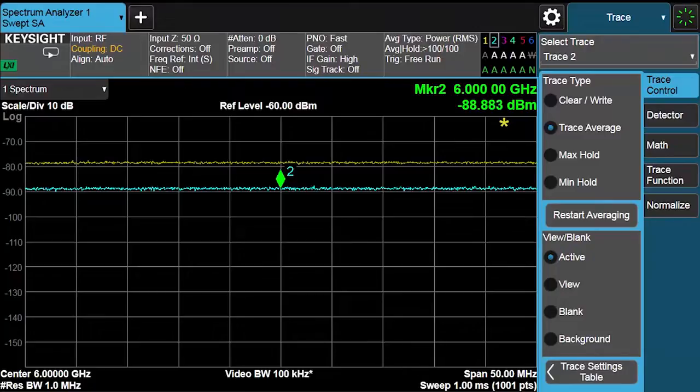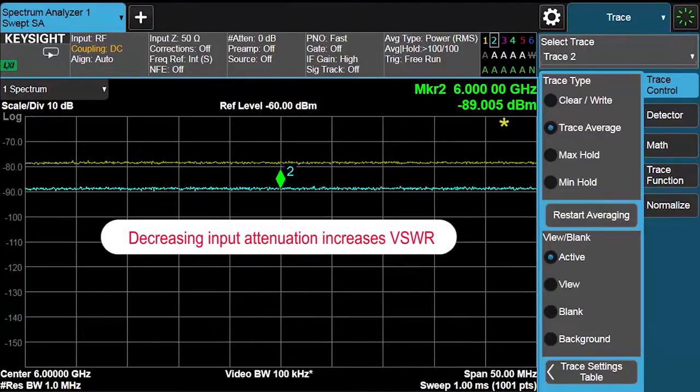The downside to decreasing the analyzer's input attenuation is an increase in the analyzer's input voltage-standing wave ratio, as a down-converting mixer is now directly exposed to the analyzer's input. Caution must be observed when removing front-end attenuation, as it is possible to overdrive the analyzer's mixer, resulting in compression and IF overload.